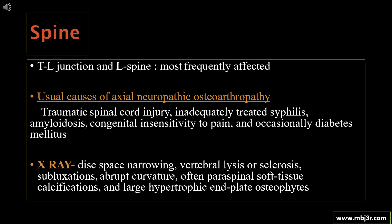Neuropathy can affect the spine as well. The thoracolumbar junction is the most frequently affected area. Usual causes of axial neuropathic arthropathy include traumatic spinal cord injury, inadequately treated syphilis, amyloidosis, congenital insensitivity to pain, and occasionally diabetes mellitus. X-ray changes include disc space narrowing, vertebral lysis or sclerosis, subluxations, abrupt curvature, paravertebral soft tissue calcifications, and large hypertrophic osteophytes.